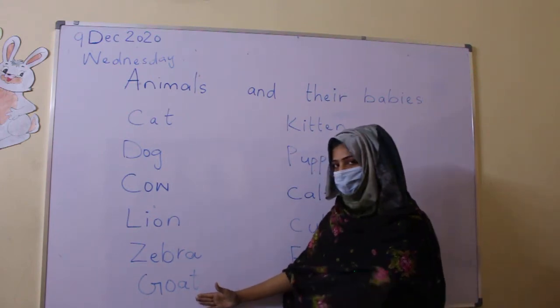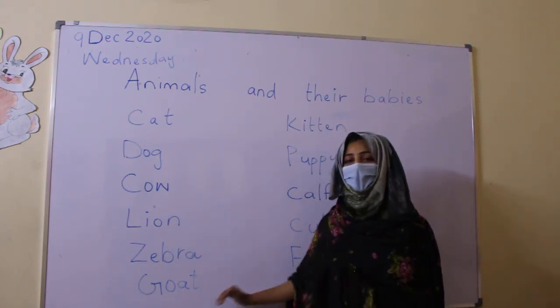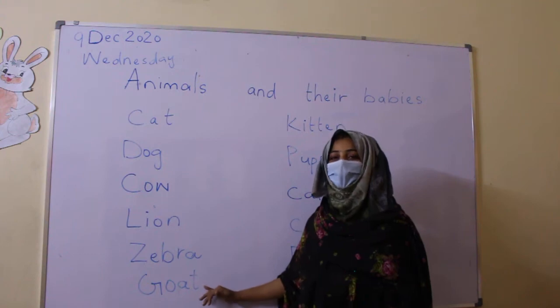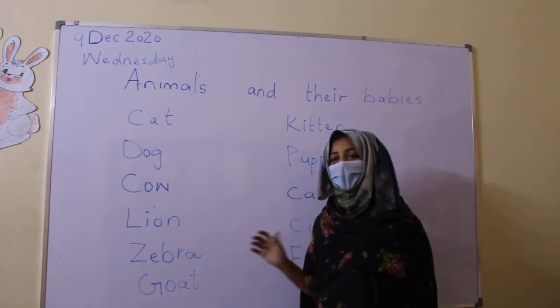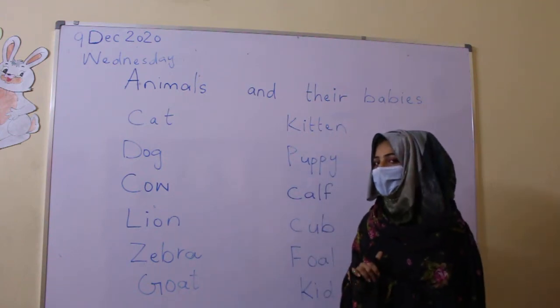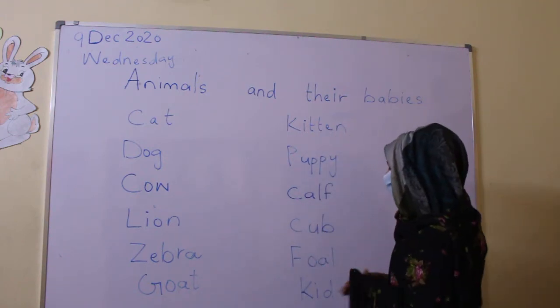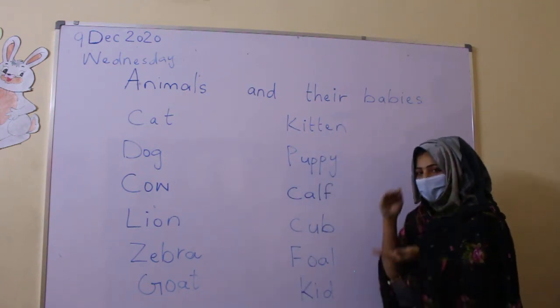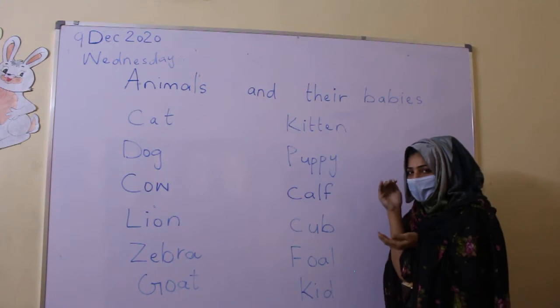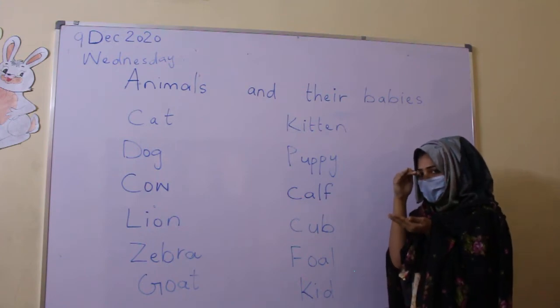Number six — goat. Goat. And the name of her baby is kid. Kid, because she is so simple.